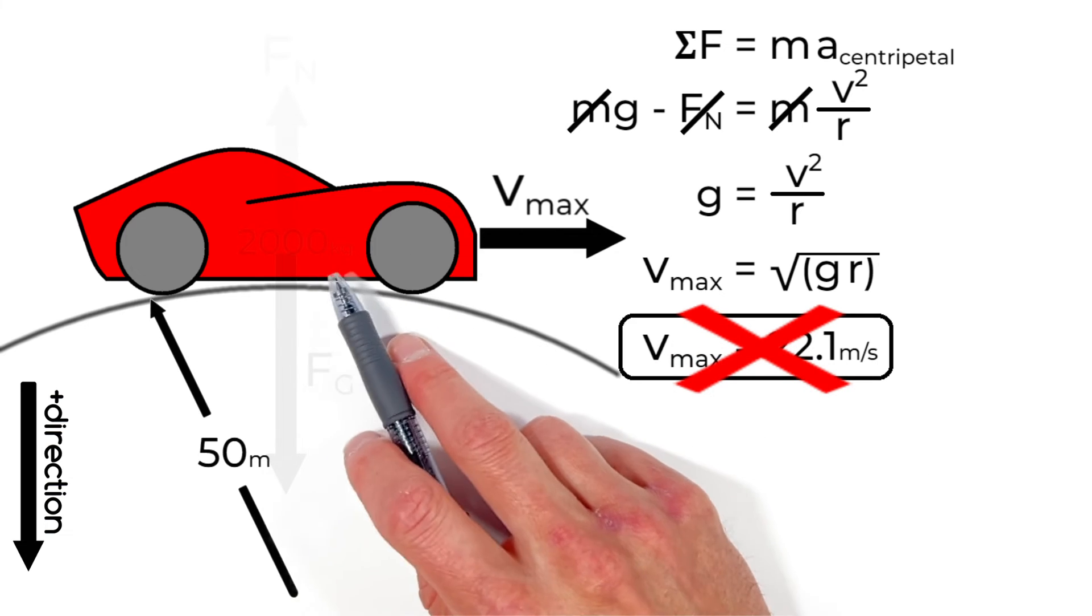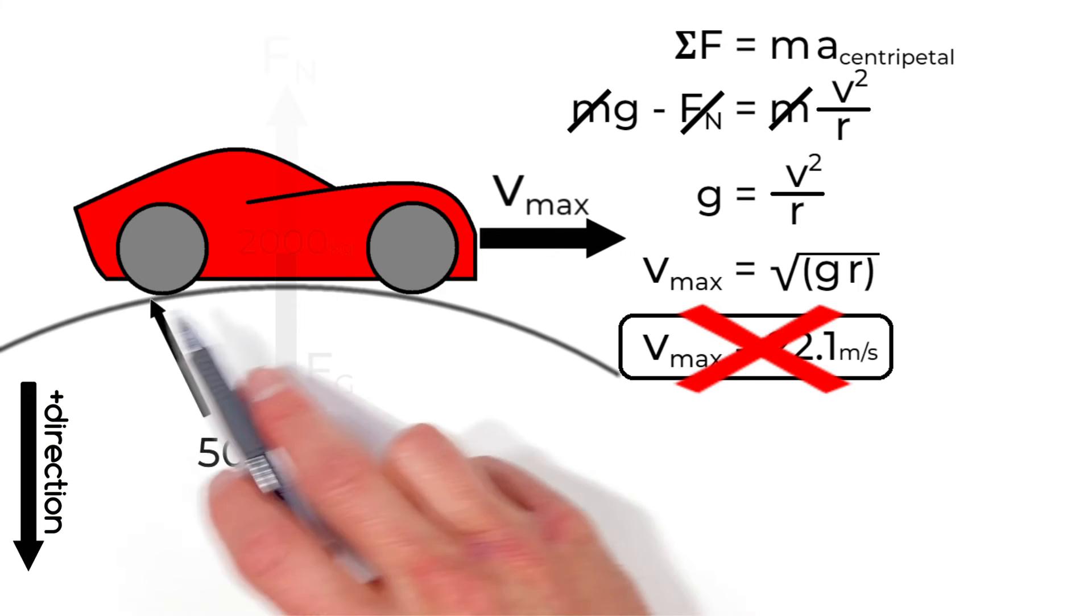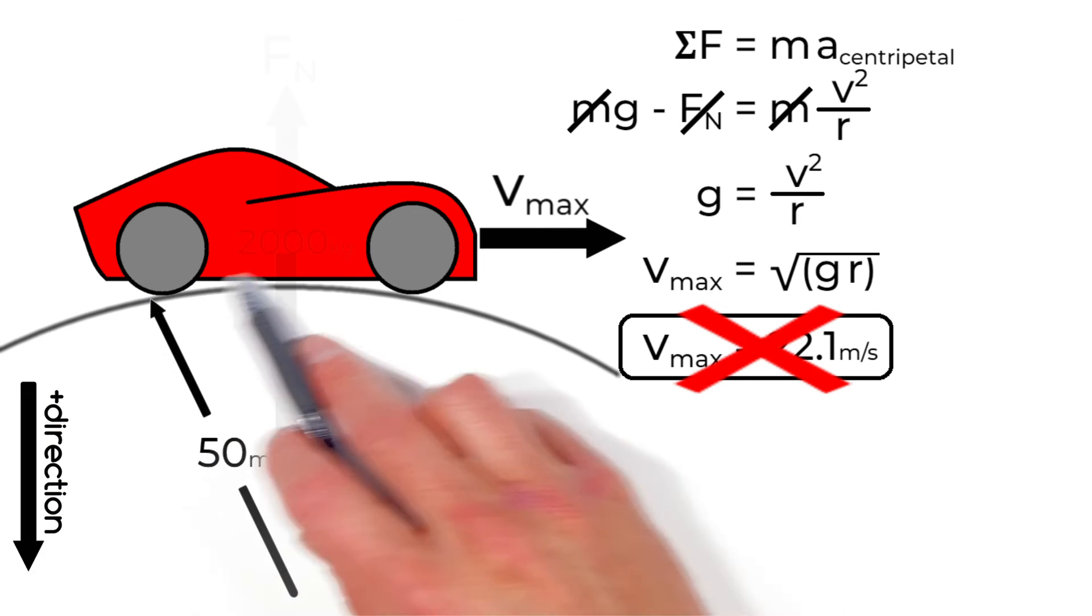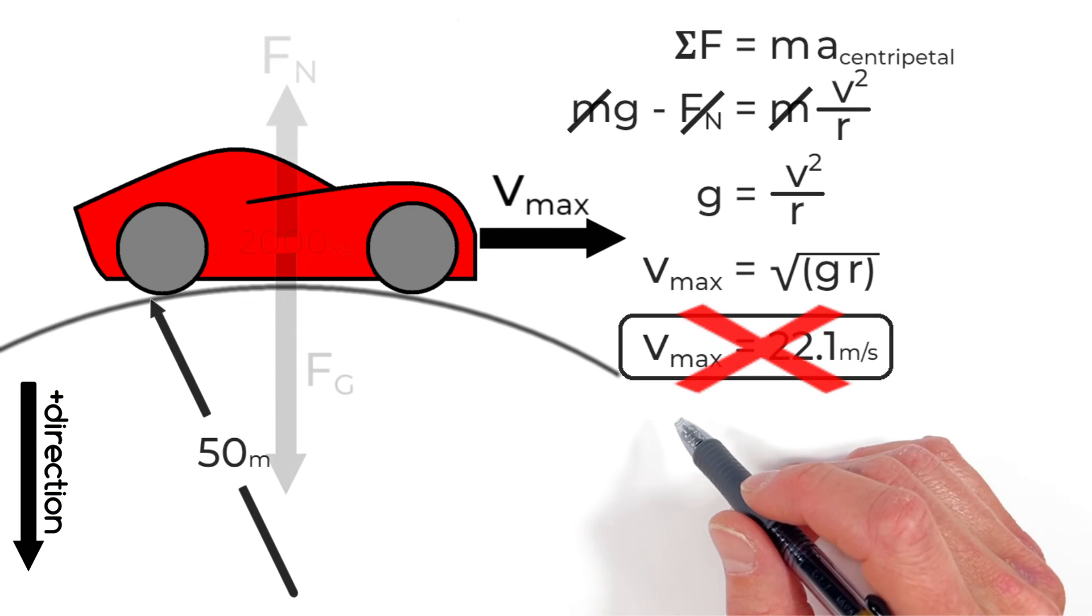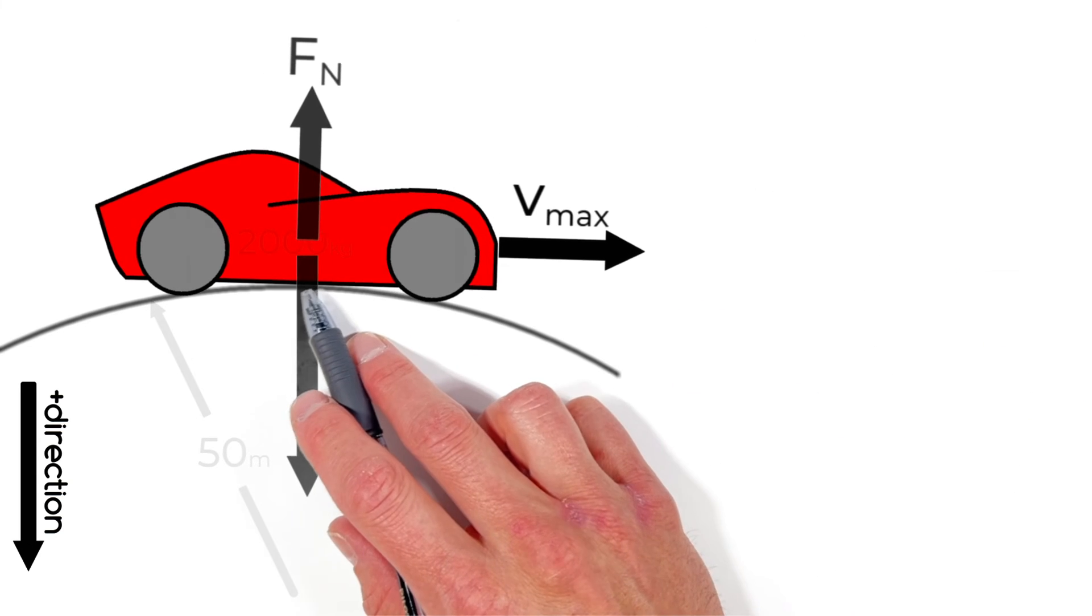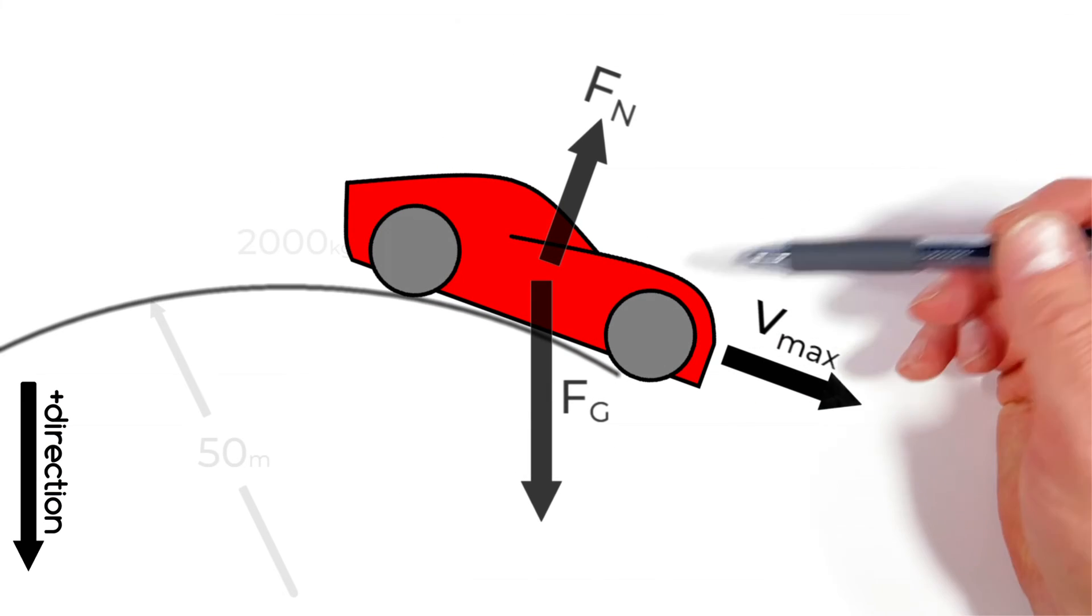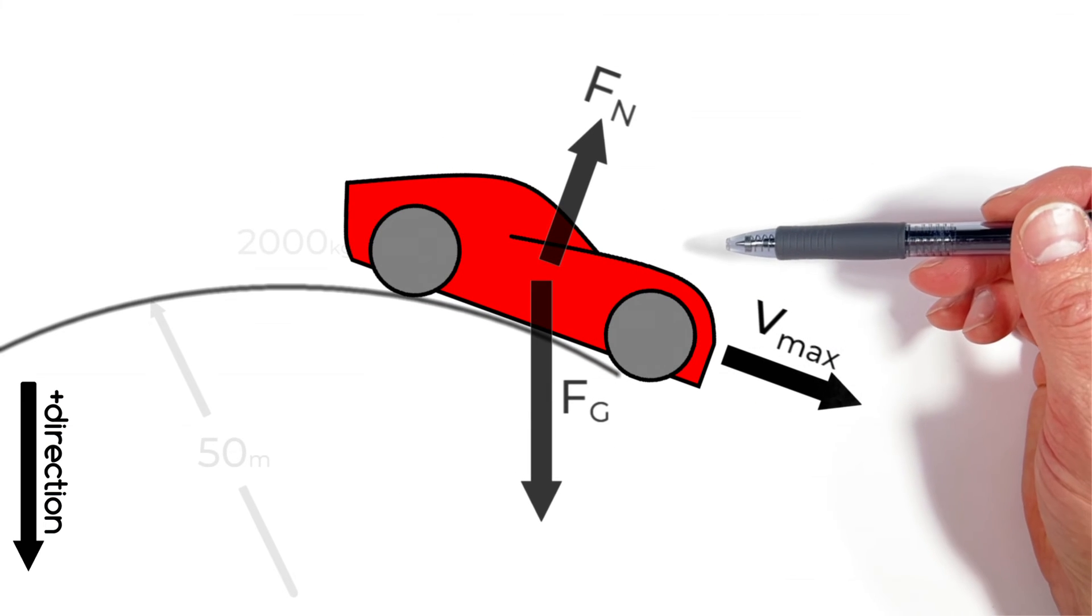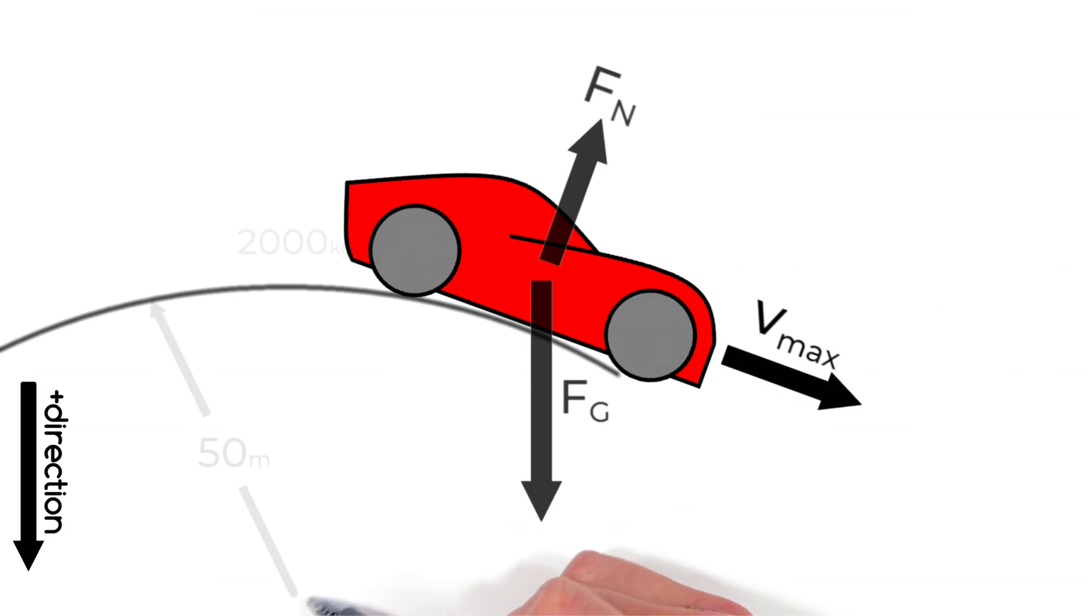You see by working out this problem you'd be led to believe that if this car stays under 22 meters per second it's going to be in contact with the hill at all points but that's not true it's still going to become airborne. See as the car moves along the hill over here at a position right here this car is still going to have to move in a circle.